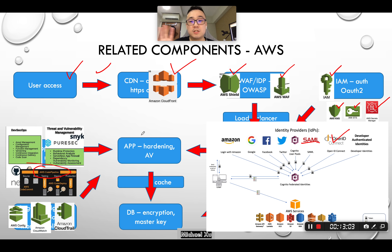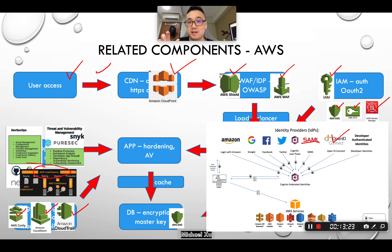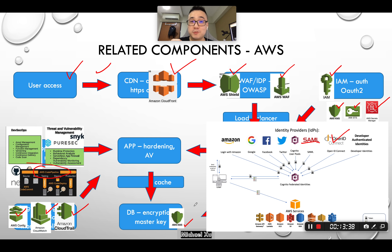From the monitoring, logging, and configuration compliance perspective, you have AWS Config and CloudWatch. Every single action generates logs, all streamed to CloudWatch, while CloudTrail serves as an auditing tool. Last but not least, for data at rest, you're given the option to secure it using your own master key. That concludes the cloud security design based on AWS components. Hope it's helpful — thank you very much.